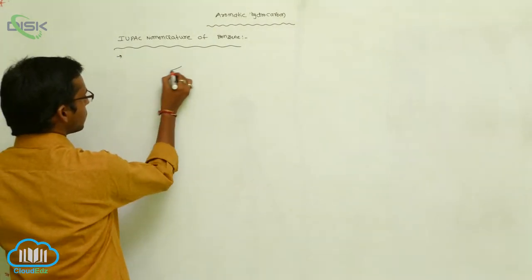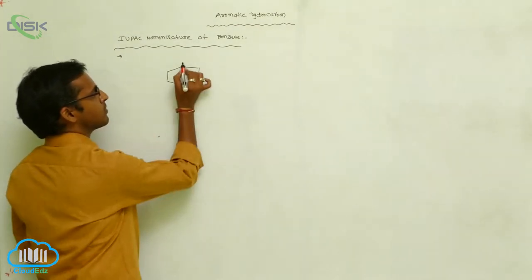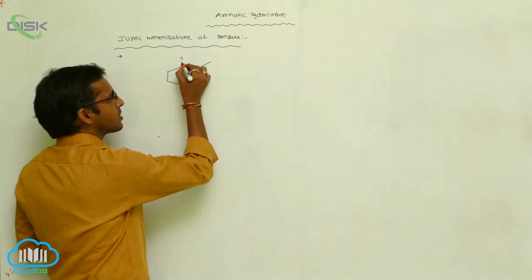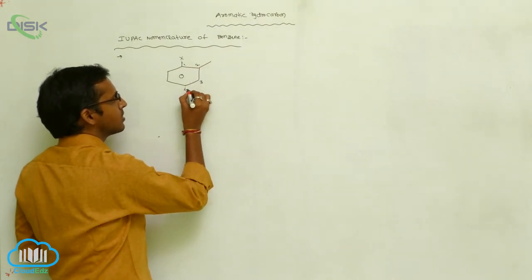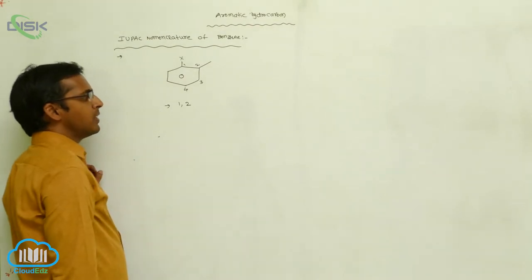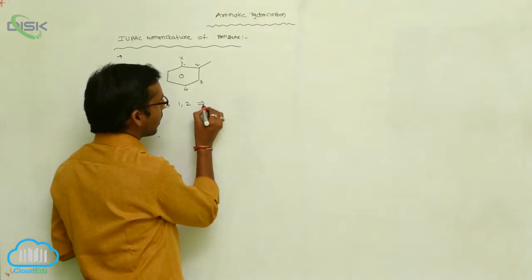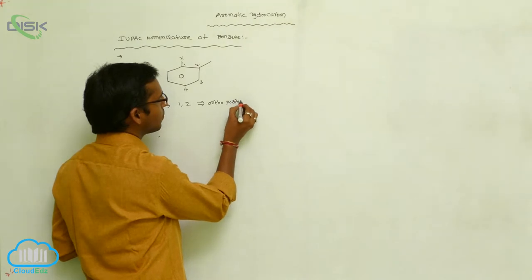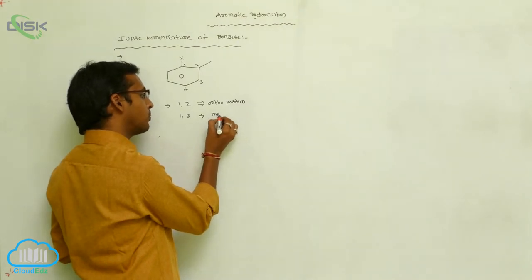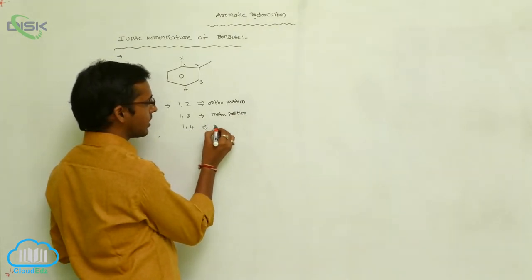So this is our benzene. On benzene, different substituents are present. For example, X is your substituent group. The positions are: this is 1, this is 2, this is 3, this is 4. In benzene, if the substituent is present at 1,2 positions, those are called ortho position. The 1,3 position is called meta position, and the 1,4 position is called para position.